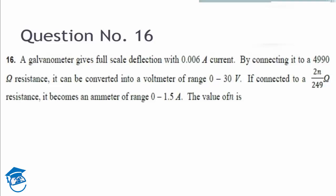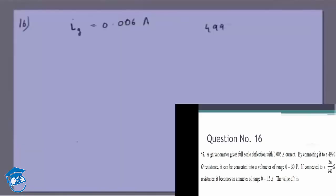Let's call it i_g or 0.006 ampere. When you connect it to a resistance of 4990 ohm, it is a voltmeter in the range 0 to 30 volt. Now we know what happens in a voltmeter.